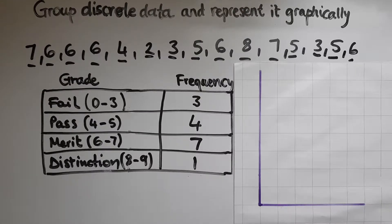So we'll need to group this data, this set of data, and represent it graphically. So what I have done, I've grouped them into fail, pass, merit and distinction because that's how I can input them in the system.